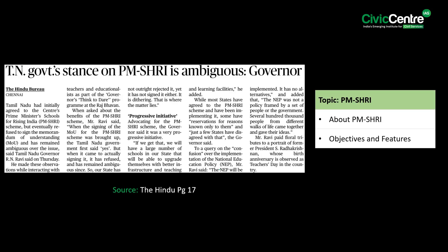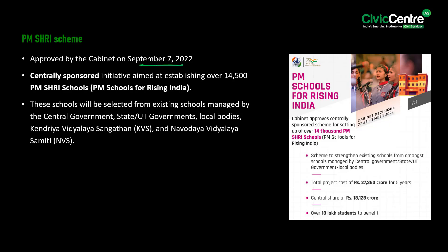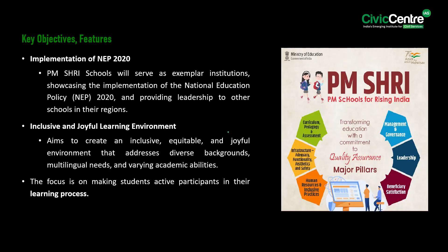The next article says that Tamil Nadu had initially agreed to the Centre's PM Shri Scheme — Prime Minister's Schools for Rising India — but eventually refused to sign the MoU, according to Tamil Nadu Governor R.N. Ravi. The PM Shri Scheme, approved by the Cabinet on September 7th, 2022, is a centrally sponsored initiative aimed at establishing over 14,500 PM Shri schools, selected from existing schools managed by central government, state or UT governments, local bodies, Kendriya Vidyalaya Sangathan, and Navodaya Vidyalaya Samiti. PM Shri schools will serve as exemplar institutions showcasing the implementation of National Education Policy 2020 and providing leadership to other schools in their regions.